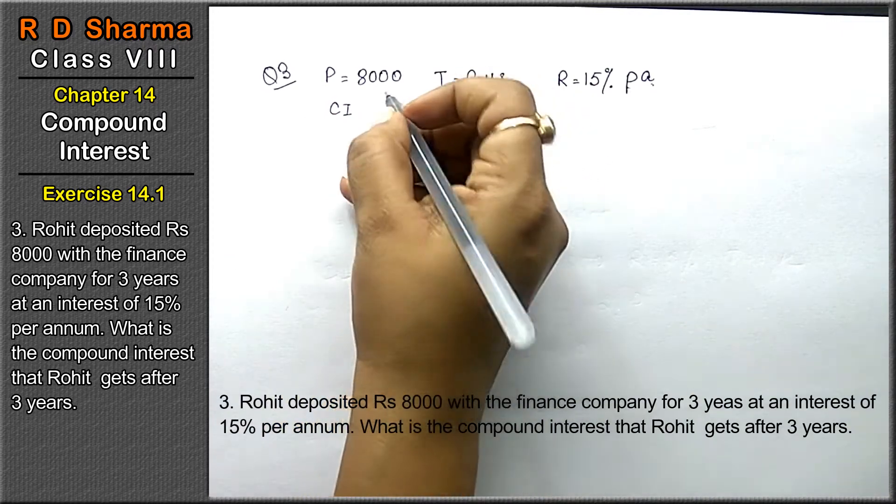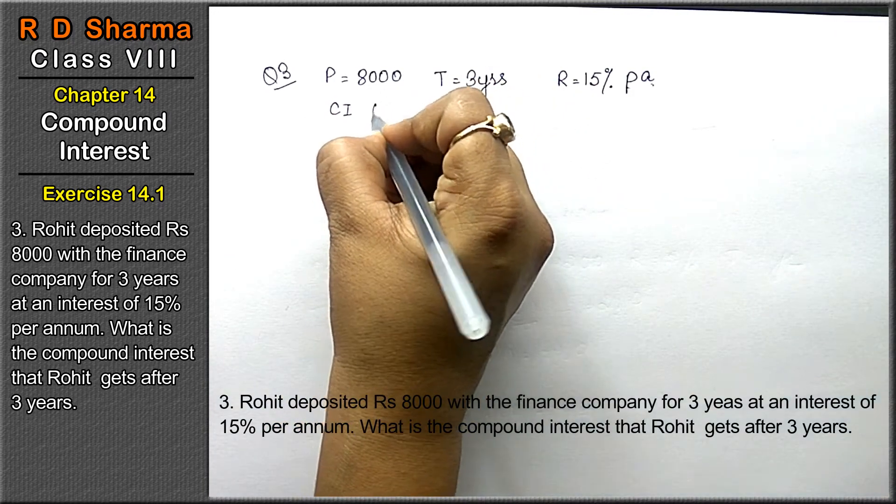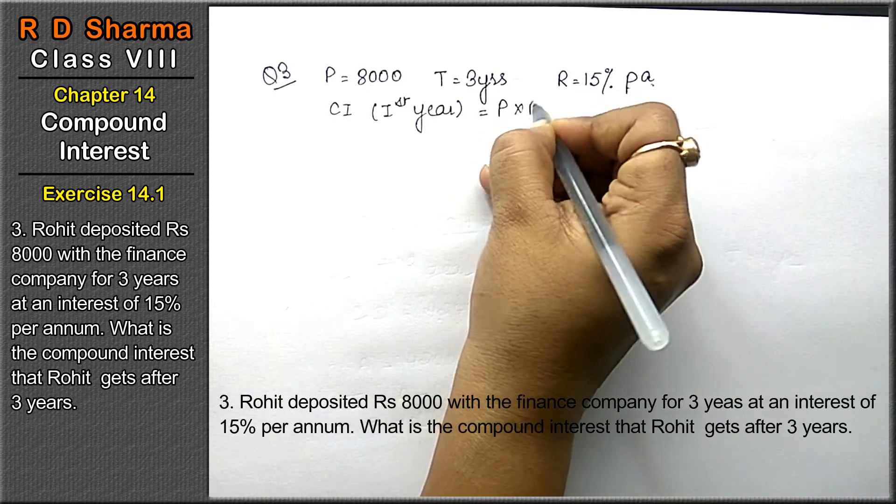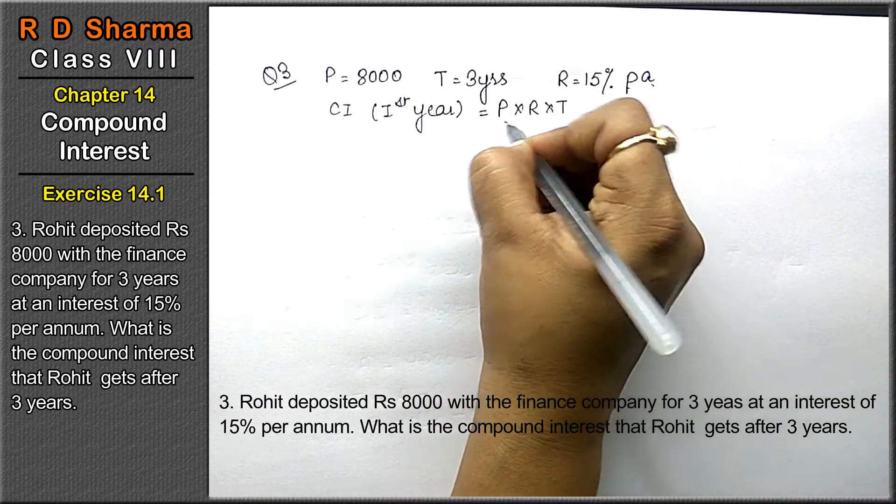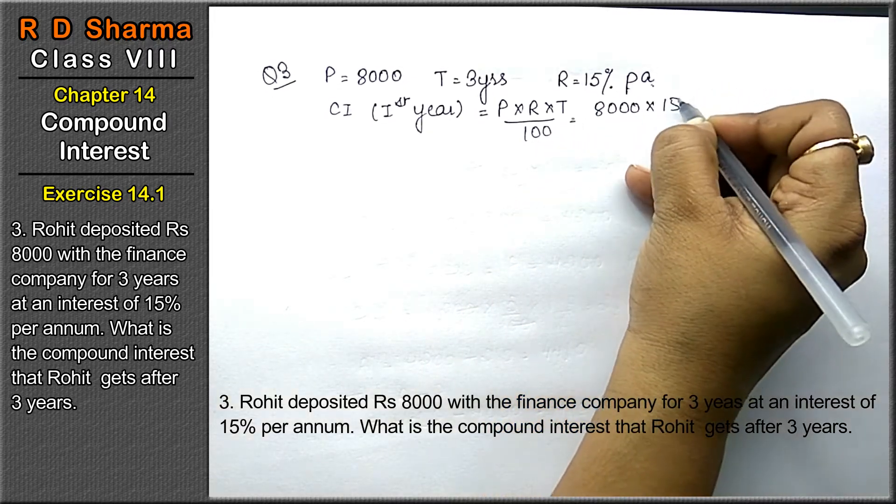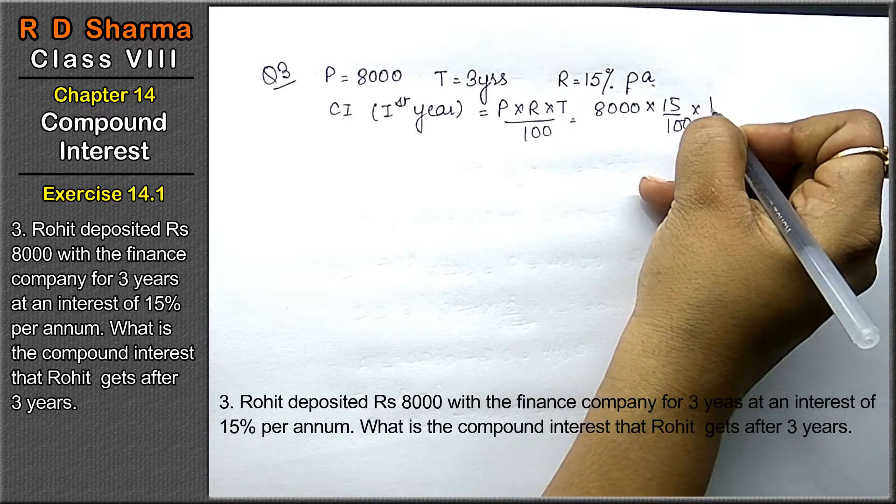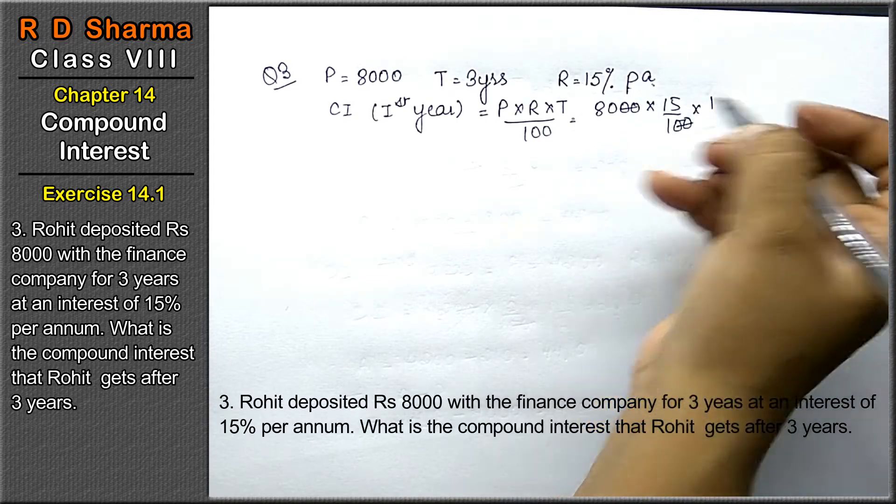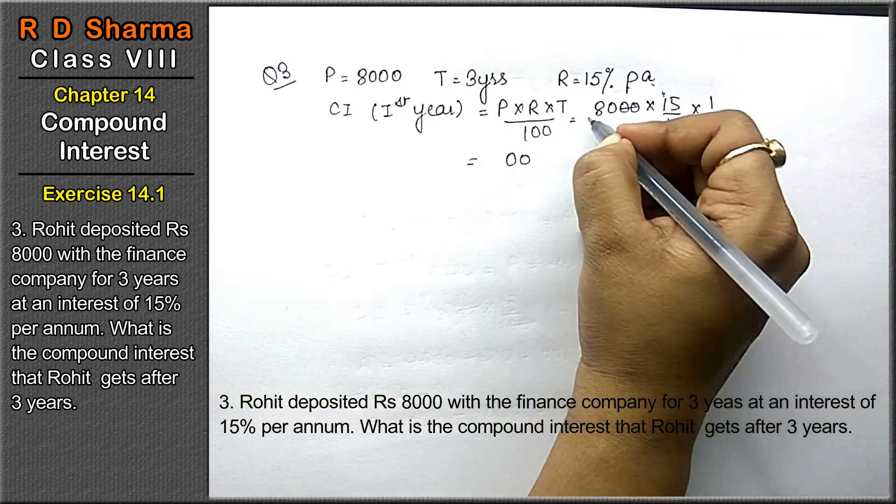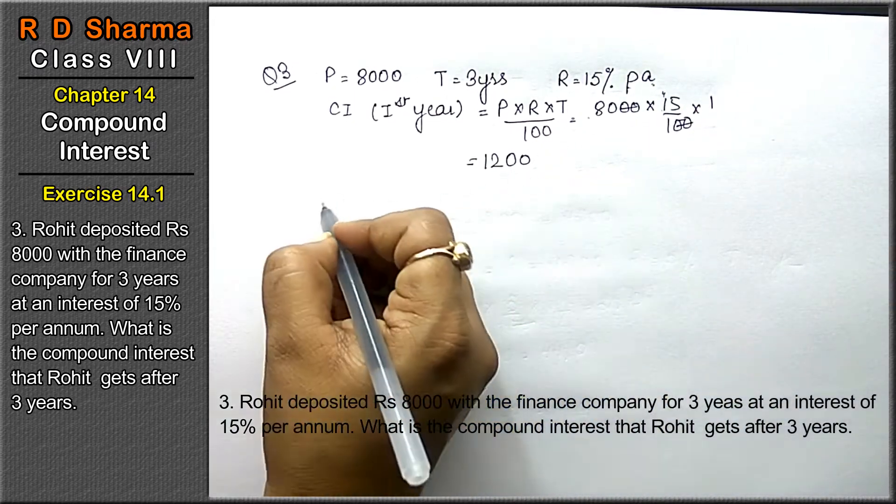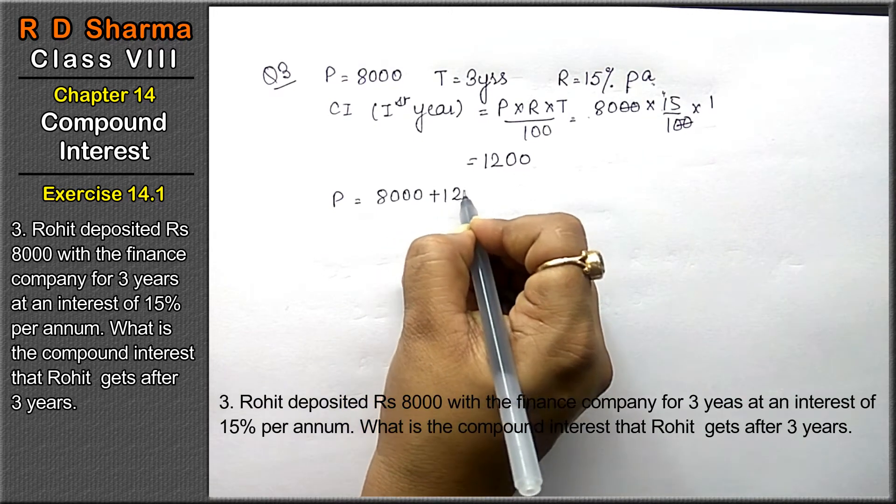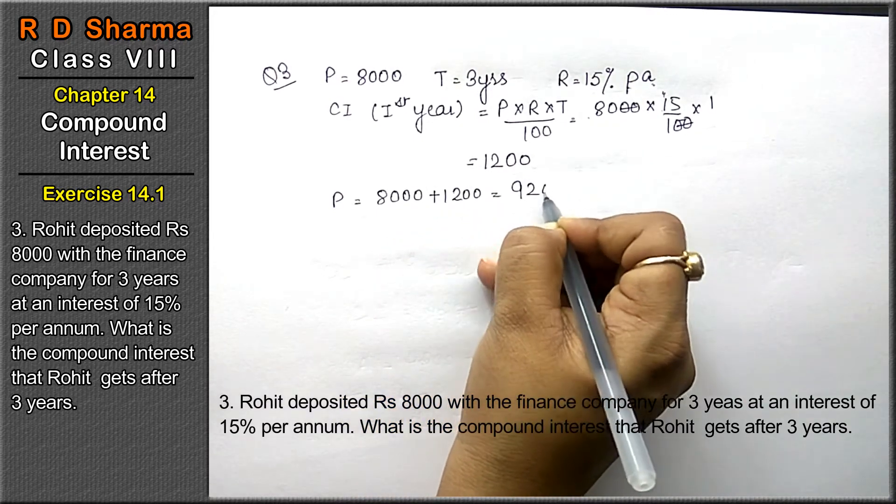Compound interest for the first year will be P into R into T upon 100. P is 8000, R is 15%, and T is 1 year. We'll calculate each year separately. The answer is Rs. 1200.